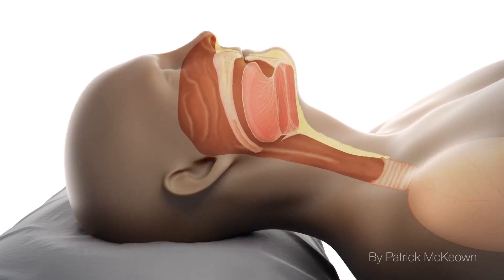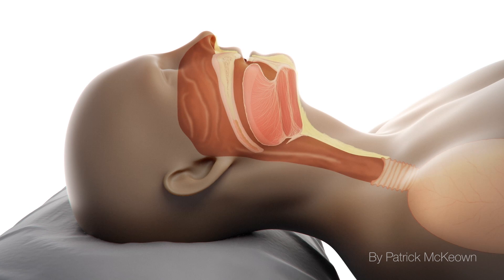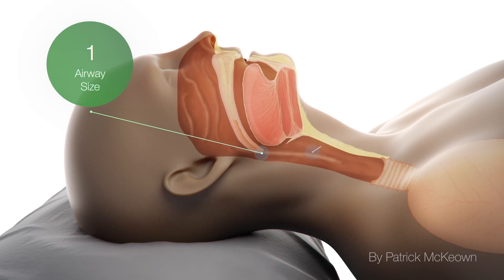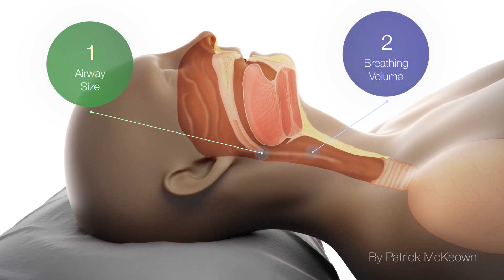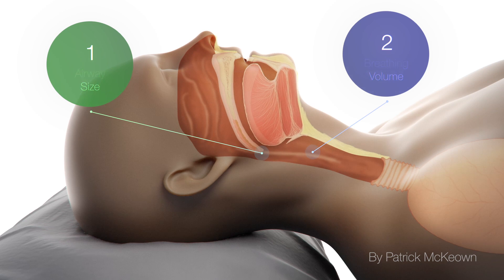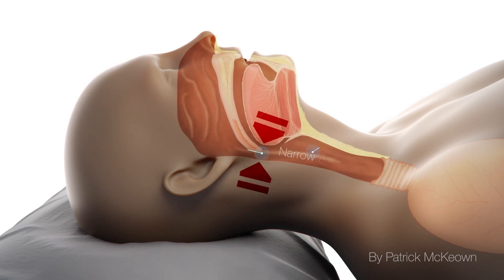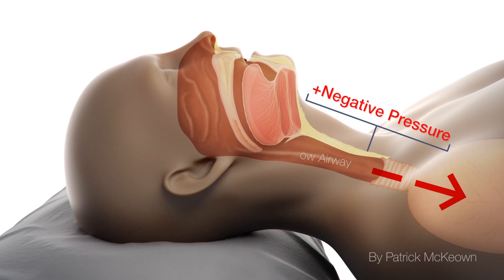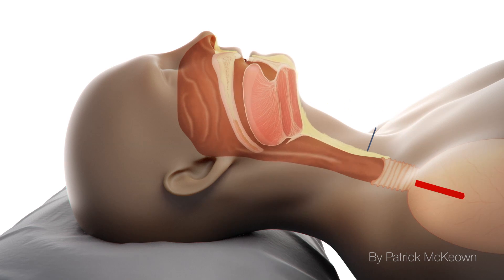In addressing obstructive sleep apnea, two factors need to be considered. The first is airway size, and the second is the amount of air that we habitually breathe. In relation to airway size, the narrower the upper airway, the greater the negative pressure as air is drawn into the lungs.